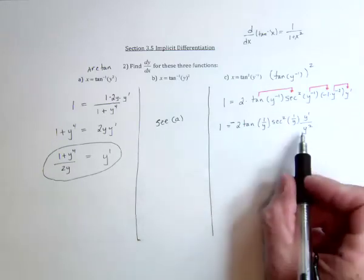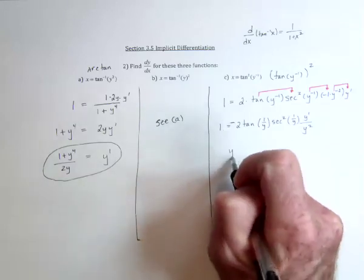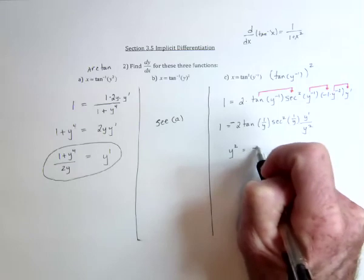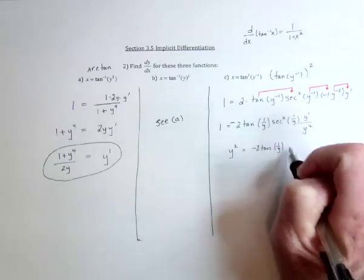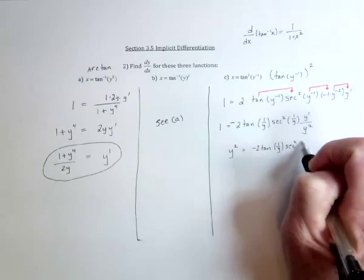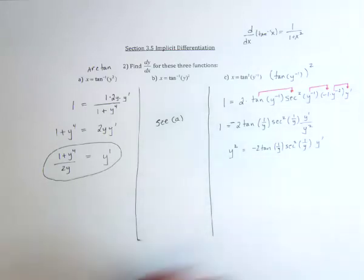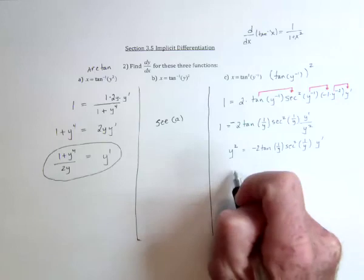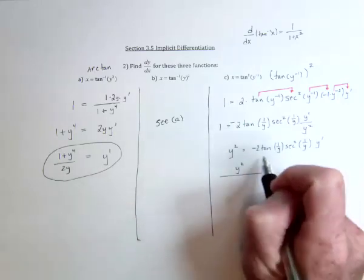And then to solve for y prime, multiply by y squared. And finally, divide by the tangent and the secant. So we'd have y squared gets divided by, so divide by all this stuff, leaving the y prime by itself over here.